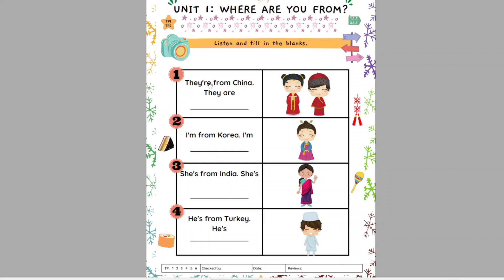Okay, the first one. Read together — baca sama-sama. They are from China. Mereka adalah daripada China. They are Chinese. The answer is Chinese — write it down here. You can check your spelling, maybe in your textbook.